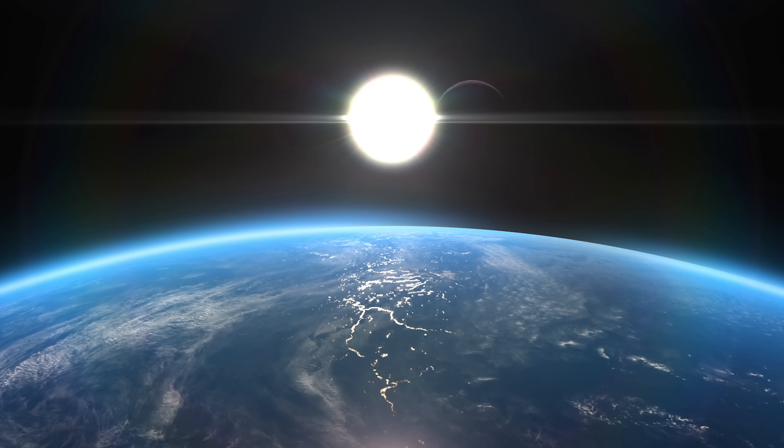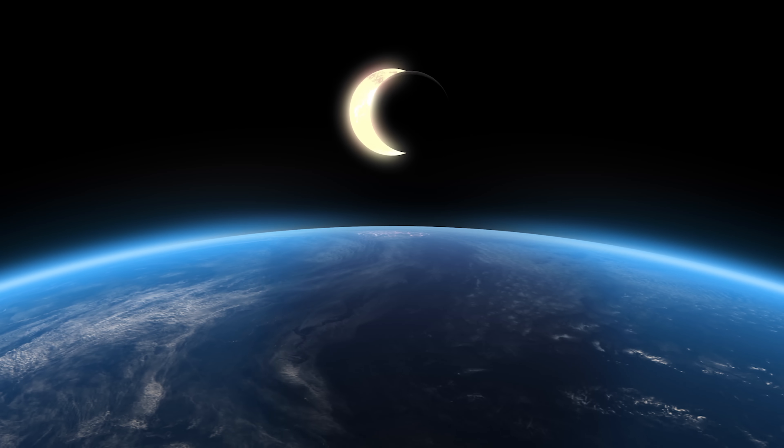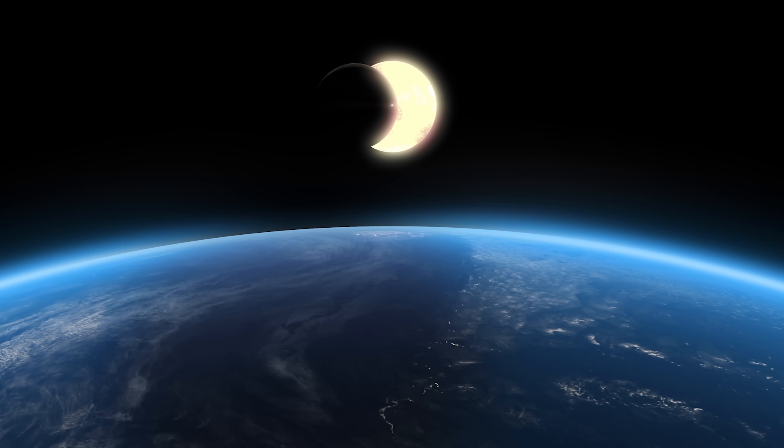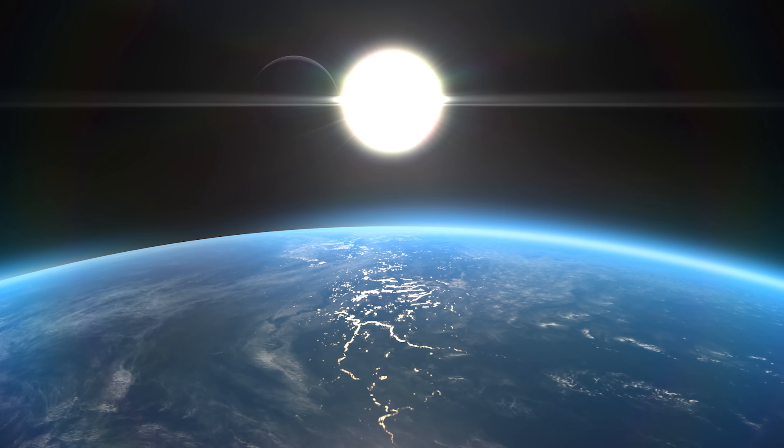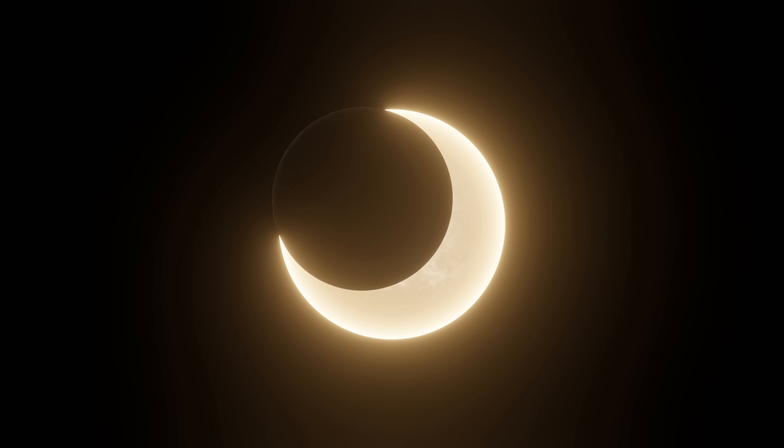Earth's shadow only comes into play during lunar eclipses, rare events that happen when Earth, Sun, and Moon are perfectly aligned. During a lunar eclipse, the Moon actually passes through Earth's shadow and temporarily darkens. But normal monthly phases are just a matter of geometry and perspective.